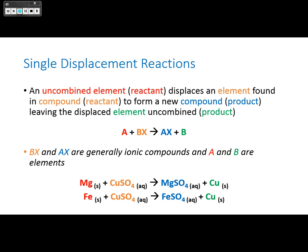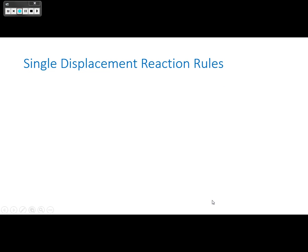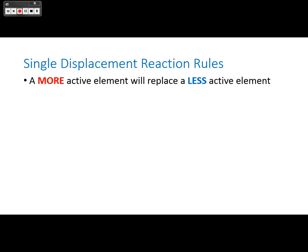In these examples, copper is the element being displaced. Magnesium displaces the copper to combine with the sulfate, leaving copper by itself. There are rules that dictate whether these reactions occur: a more active element will replace or displace a less active element.